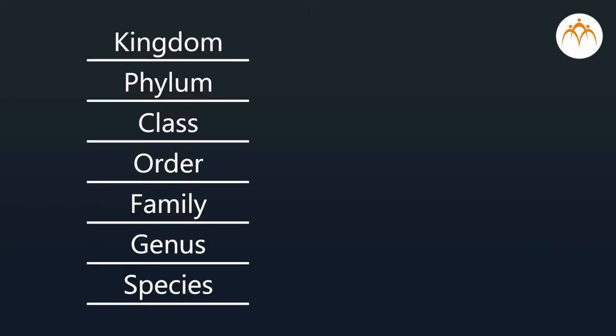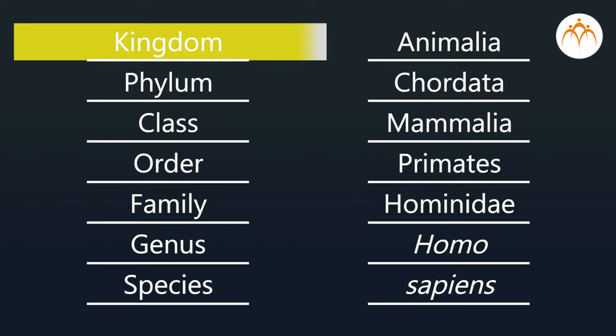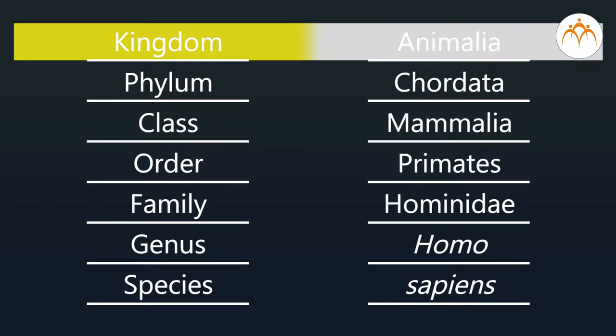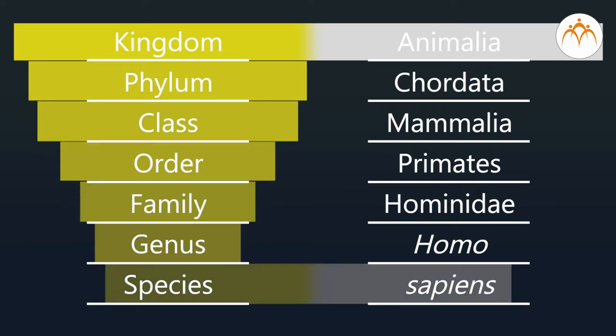Similarly, in biological classification, the kingdom is the highest rank, and all animals are included in it. They share common features like absence of a cell wall, inability to prepare their own food, and showing locomotion. The last rank in this hierarchy is species, which represents a single type of organism — the smallest unit.